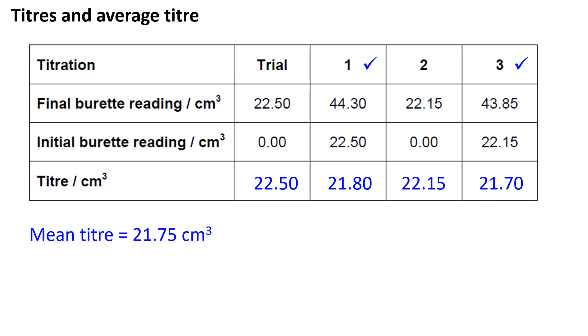Remember, all titration readings must be recorded to two decimal places. Concordant titers are indicated with a tick. The average titer or mean titer is 21.75 cm³ in this case.